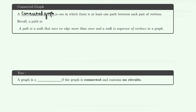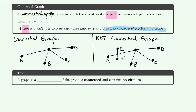This is our last video covering graph theory for the class. To begin, we're going to look at the definition of a connected graph — an alternate definition from our previous video, but the same concept stated differently. A connected graph is one in which you could find at least one path between each pair of vertices. A path is a walk that uses no edges more than once, and a walk is a sequence of vertices in the graph — you're going between allowable edges and vertices.